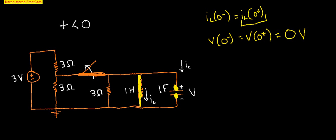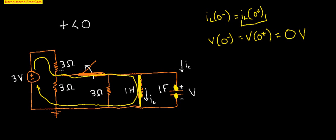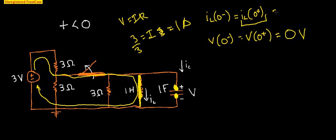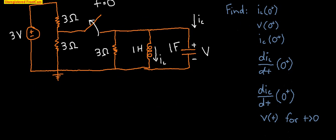Now for the current through this inductor — if we take a look at the path that electricity will flow, the current will come up through here, and once it hits this wire it will see that there's a short circuit, come around and go to the back side of the battery. So we've got 3 volts passing through only this one 3-ohm resistor. Using V = IR, V is 3, R is 3, divide both sides by 3 — current equals 1 amp. So the inductor current is 1 amp and the capacitor voltage is 0 volts.